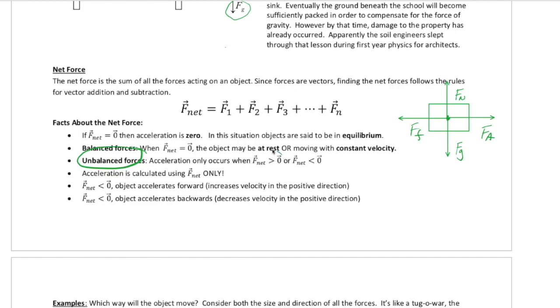So acceleration only occurs when the forces are out of balance. So if F net is greater than zero, then the object is going to accelerate in the positive direction. When F net is less than zero, it's going to accelerate in the negative direction. So very specifically, acceleration is calculated only using the net force, not the individual forces themselves. But the overall force.